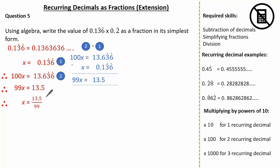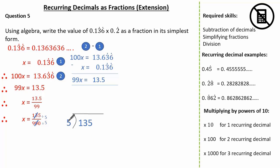Finding the value of x, we know x is equal to 13.5 over 99. Converting this to a fraction by multiplying the numerator and denominator by 10, we have 135 over 990. You might be able to see the last digit of our numerator and denominator are 5 and 0, so therefore we can divide both by 5. Taking our time: how many 5's go into 13? 2, remaining 3. How many 5's go into 35? 7. A nice little trick to divide by 5 is to divide by 10 and then double it. So 135 divided by 10 is 13.5, doubled is 27. 990 divided by 10 is 99, doubled is 198. So this means we have 27 over 198.